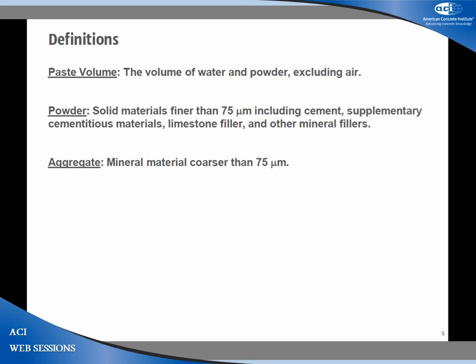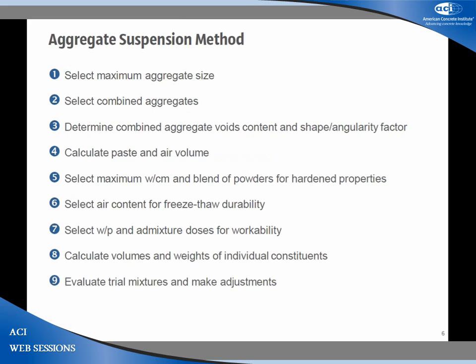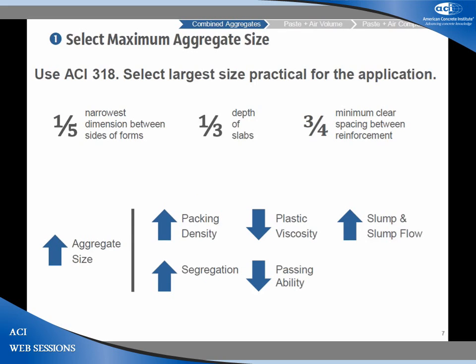The method has nine steps organized across aggregate phase, paste volume, and paste composition. Step one is to select maximum aggregate size using ACI 318 recommendations. We always want the largest aggregate size practical for the application because it gives higher packing density, lower plastic viscosity, and higher slump and slump flow. The only reason to limit it would be for segregation or passing ability concerns related to the specific application.